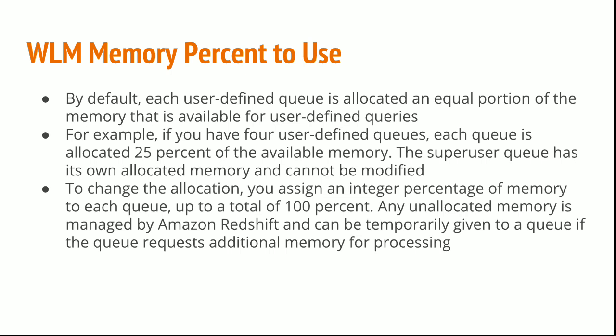By default, each user defined queue is allocated an equal portion of the memory available for user defined queries. For example, if you have four user defined queues, each queue is allocated 25% of the available memory. The superuser queue has its own allocated memory and cannot be modified. To change the allocation, you assign an integer percentage of memory to each queue, up to a total of 100%. Any unallocated memory is managed by Amazon Redshift and can be temporarily given to a queue if the queue requests additional memory for processing.